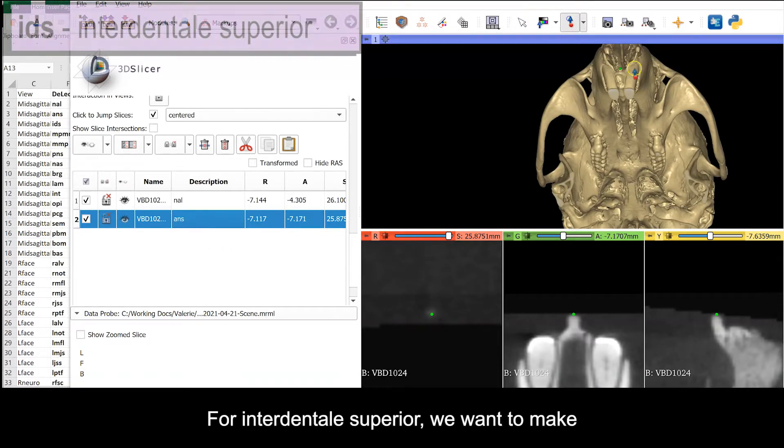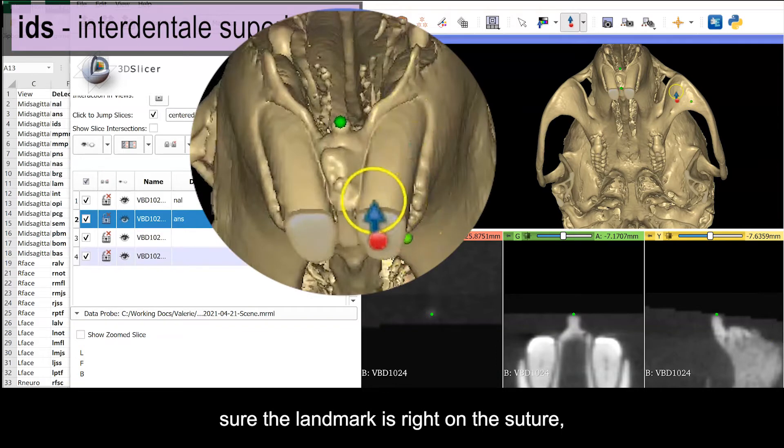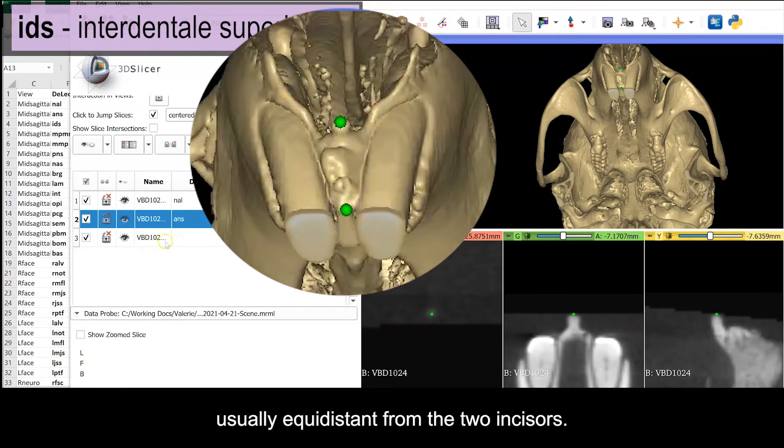For inner dentale superior, we want to make sure the landmark is right on the suture, usually equidistant from the two incisors.